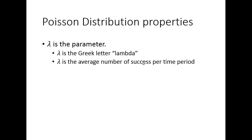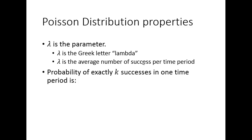You need to ensure the time period for your question matches the time period for lambda. For example, if lambda is 2 successes per day, you could convert to 60 successes per month and ask questions in those units — but they must be consistent. The formula for getting exactly k successes is lambda to the k, times e to the negative lambda, divided by k factorial. This is built into the Poisson PDF and CDF on your calculator.